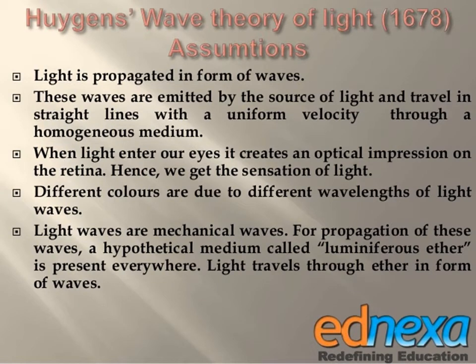The second scientist, Huygens, proposed his theory called the Wave Theory of Light. He suggested that light is propagated in the form of a wave. According to Newton, light consists of corpuscles, but according to Huygens, light is a wave.